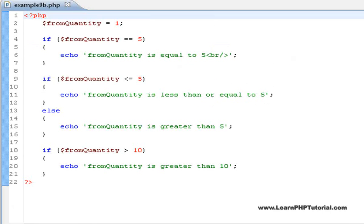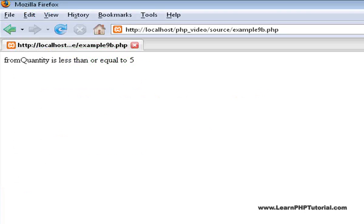Have a look at the next example, 9b. Since we've initialized from quantity to 1, the only comparison that evaluates to true is this one. If from quantity is less than or equal to 5. So everything within the curly braces is executed, and we can expect to see this string displayed in the browser.